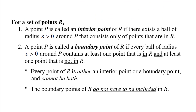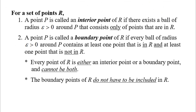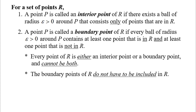Next, we'll talk about interior points and boundary points. A point P is called an interior point of a region R if there exists a ball of radius epsilon around P that consists only of points in R. A point P is called a boundary point of region R if every ball of radius epsilon contains at least one point in R and at least one point not in R. Every point is either an interior or a boundary point — not both — and boundary points do not have to be included in R.